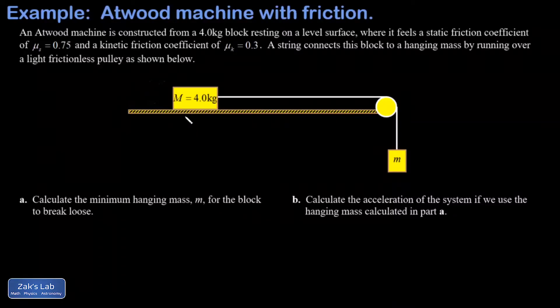In this video we have an Atwood machine with friction. So we have a 4 kg block sitting on this level surface. It experiences a static friction coefficient of 0.75 and a kinetic friction coefficient of 0.3.